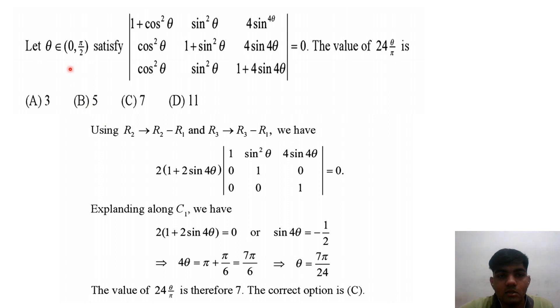Therefore, 24θ = 7π. The value of 24θ/π is 7, making the correct option (C) 7.